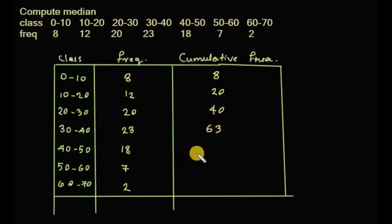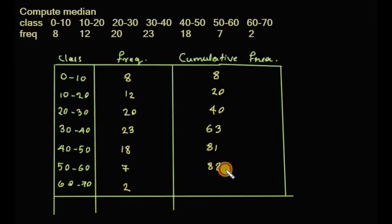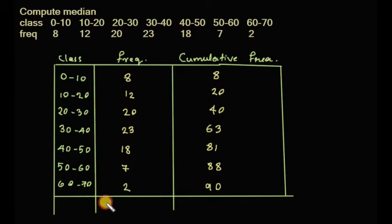The cumulative frequencies are 20, 40, 63, 81, 88, and 90. The total frequency, N, is equal to 90.